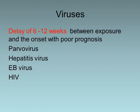After exposure to viruses, there is a delay of 6 to 12 weeks between the exposure and the onset, and the prognosis is usually poor. Examples of these viruses include parvovirus, hepatitis virus, Epstein-Barr virus, and HIV.